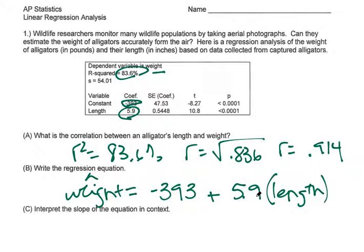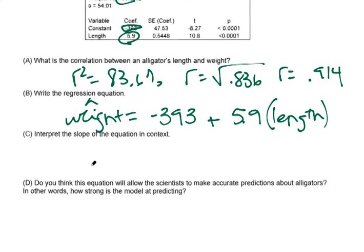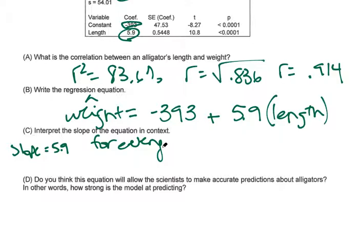Interpret the slope in context of the equation. So the slope is 5.9. For every one inch in length, the predicted weight of the alligator increases by approximately 5.9 pounds.